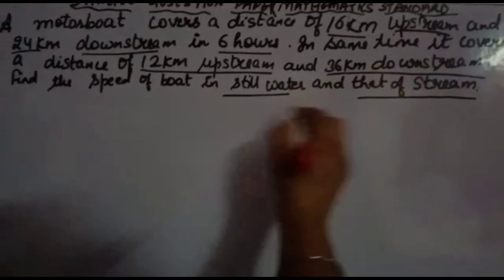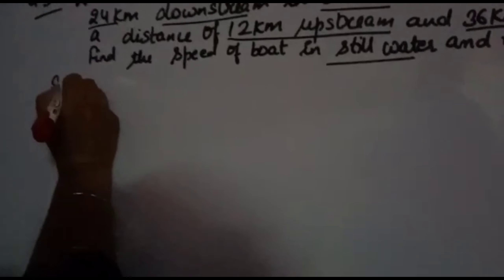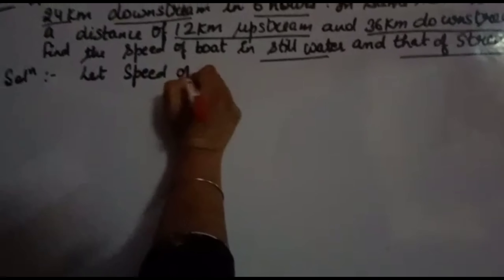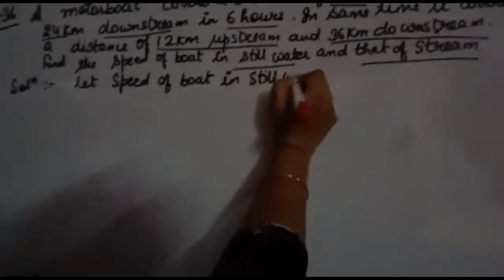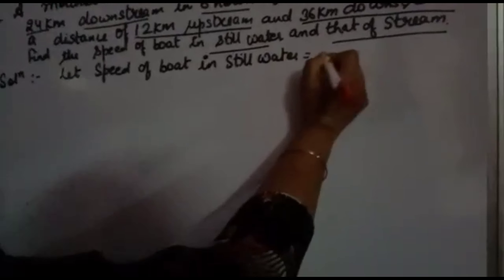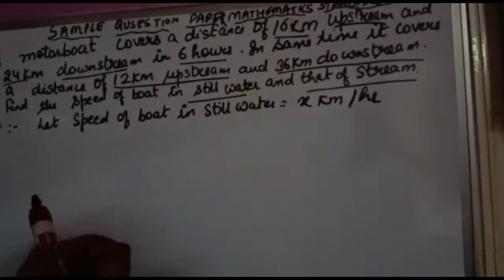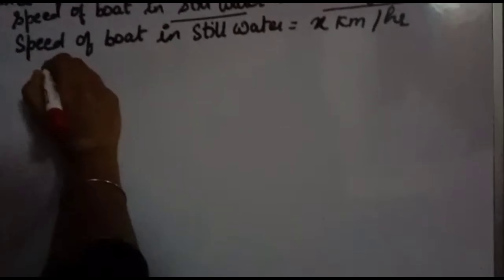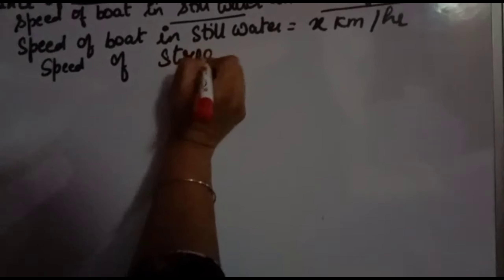You have to find the speed of the boat in still water and that of the stream. This is a very important question. Let the speed of the boat in still water be x km per hour — time is given in hours and distance in km, so we use km per hour. Let the speed of the stream be y km per hour.